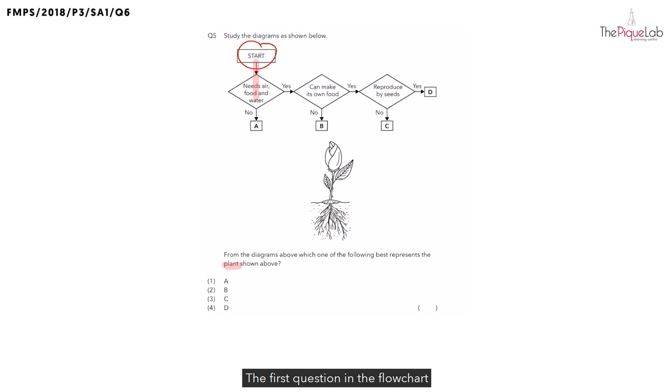The first question in the flowchart is whether the plant needs air, food and water. Now, can you recall what are the things that need air, food and water? They are the living things. In this case, is the plant a living thing? Yes, the plant is a living thing. And because of this, do you think the plant needs air, food and water? The answer is yes. So can letter A represent this plant? The answer is no. So now we know that A cannot be the answer.